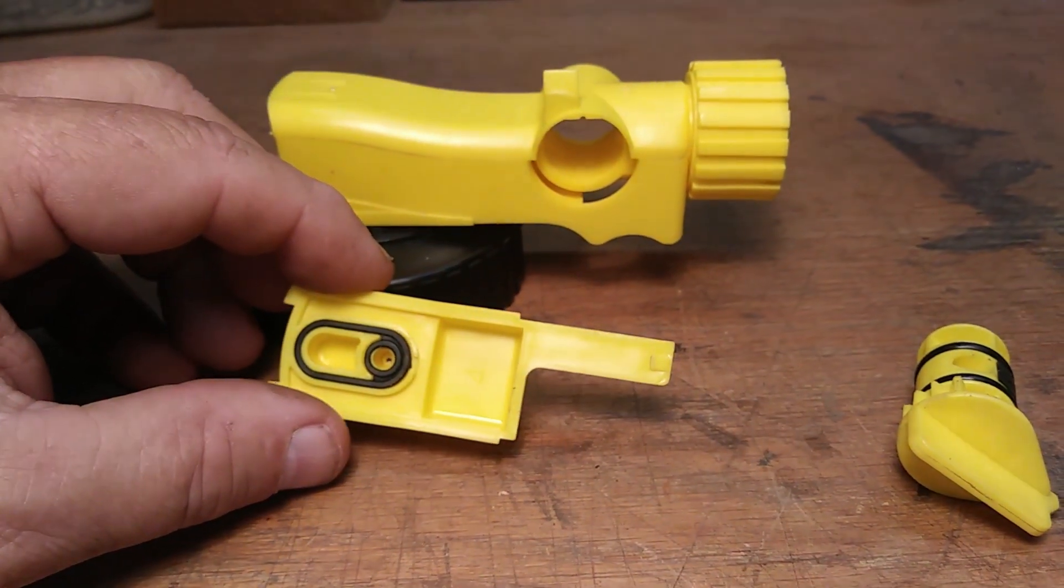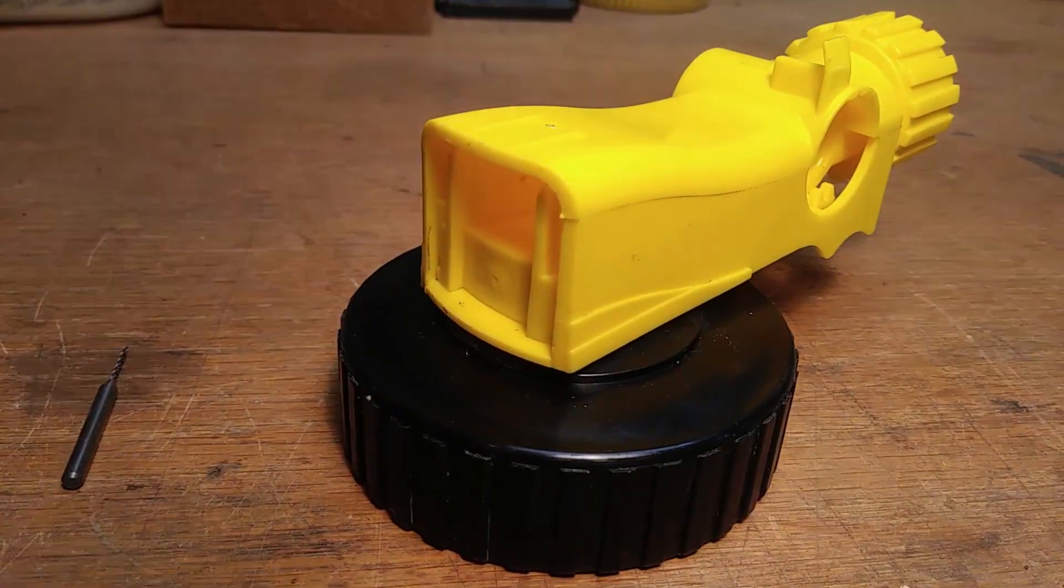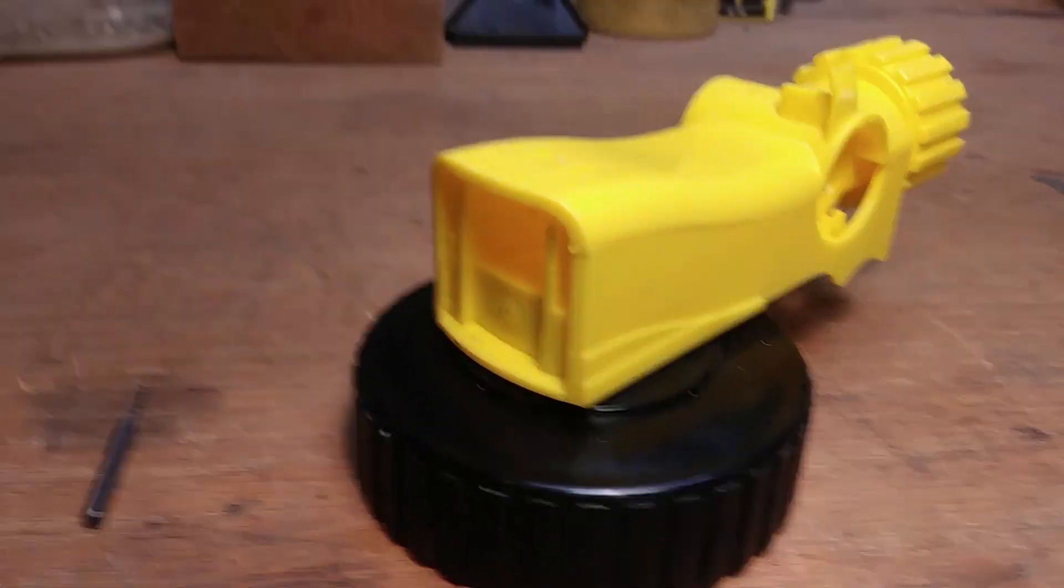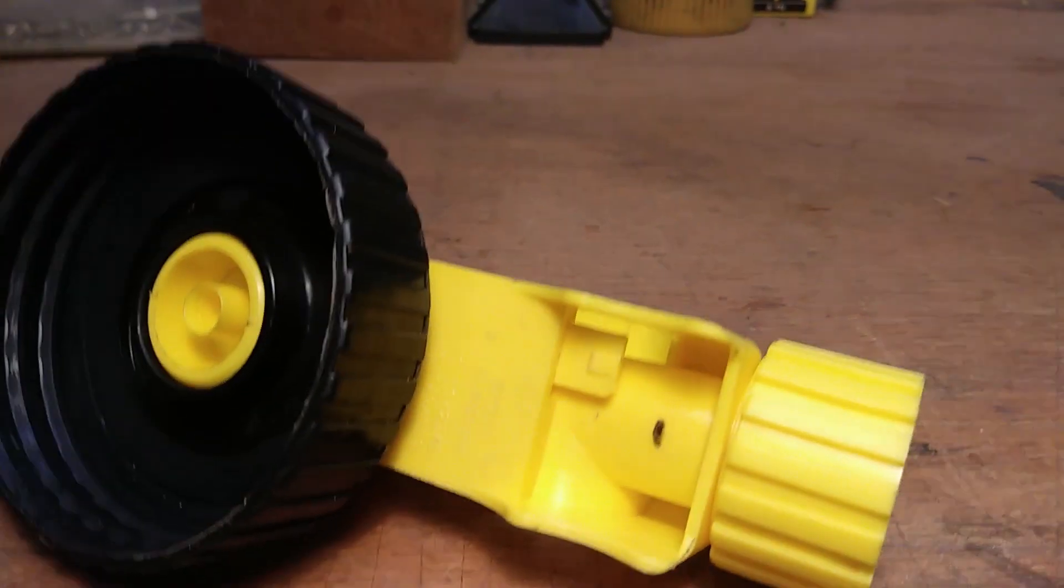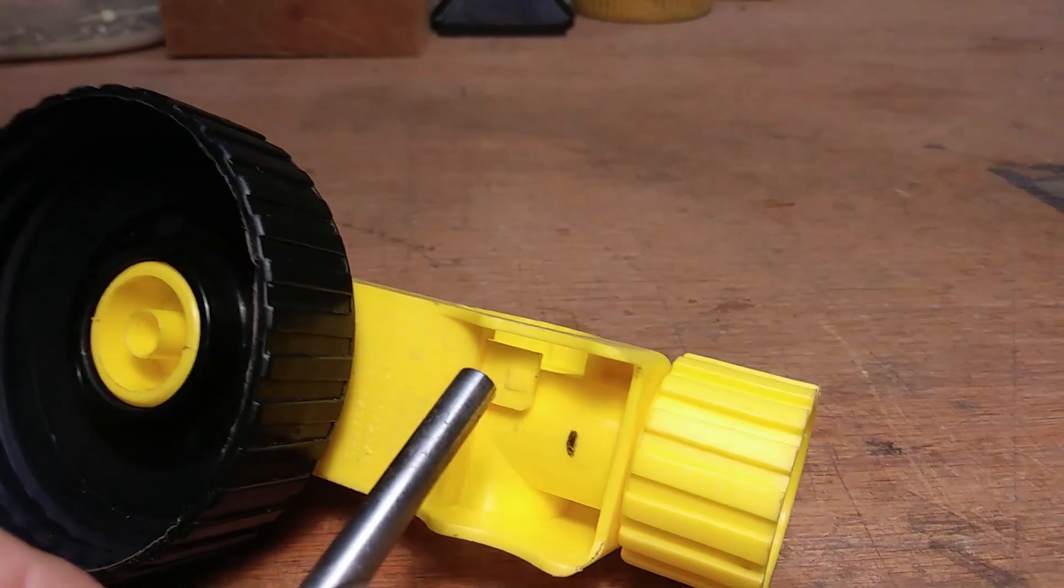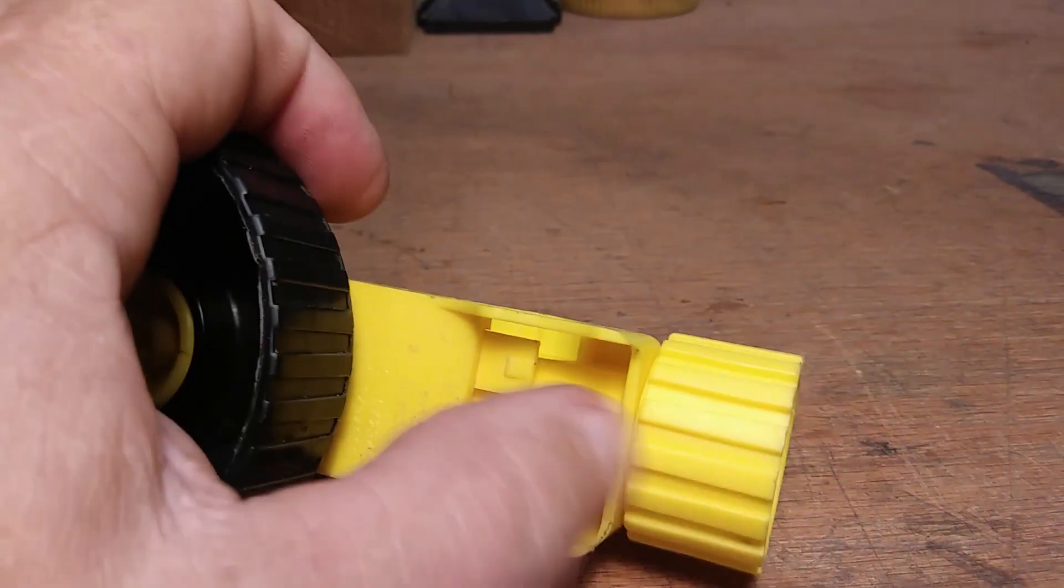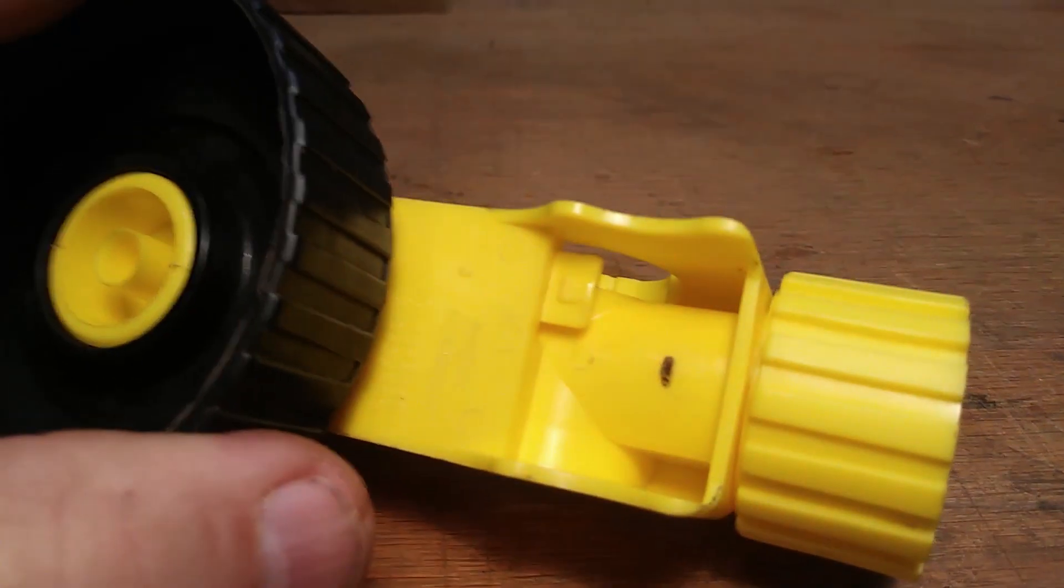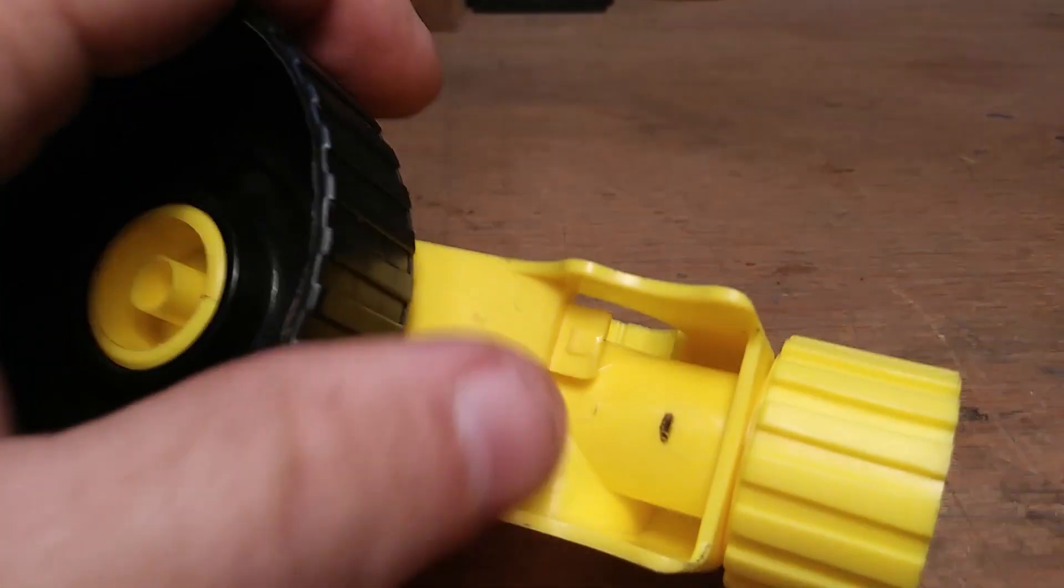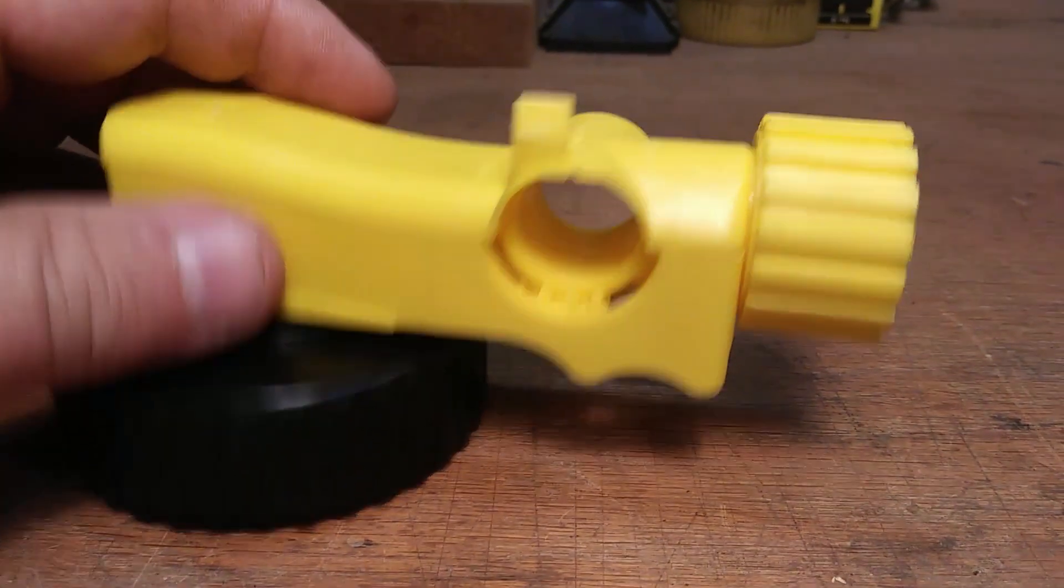When you slide up that sliding section in there, on the bottom side you'll see there's a little stop. As you push it all the way forward, that's all the further it's going to go in. So if you want to take it out you push that down and it'll all slide forward. That's the on setting.